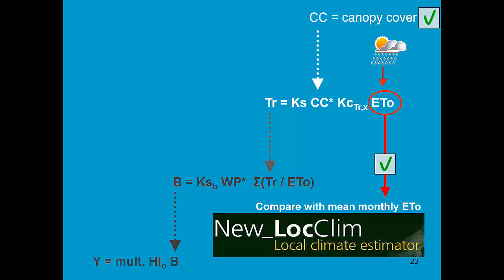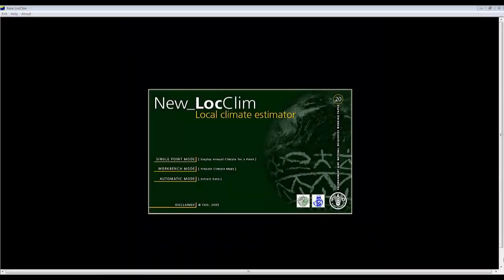FAO has developed a local climate estimator, NewLocClim, which contains mean monthly ET₀ data from all over the world. What we need to do is check if our ET₀ data is comparable to the mean monthly data for that location. If we need mean monthly data for a particular location, we run NewLocClim in the single point mode.